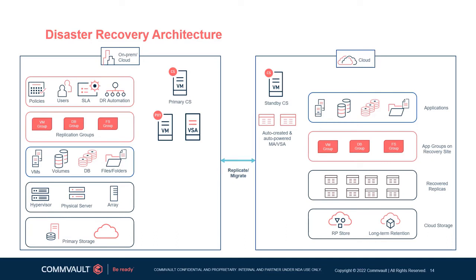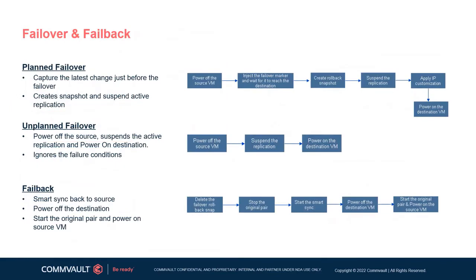You can use the Commvault Disaster Recovery solution to replicate virtual machines on a regular basis to a warm disaster recovery location. Planned and unplanned failovers follow a straightforward workflow, with visual confirmations available in Command Center to know the progress of each step — all automated with just a few clicks. It's a foolproof process that is simple enough for anyone to complete.